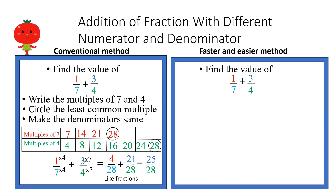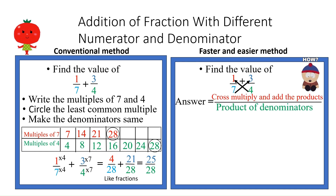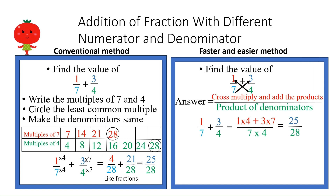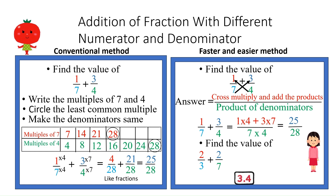Now the faster and easier method for the same question: 1/7 plus 3/4. The answer is cross multiply and add the products, divided by the product of denominators. So 1/7 plus 3/4: take the cross products and divide by 7 times 4, and you get 25/28 — the same answer as before. Try one question yourself; the answer is 20/21.